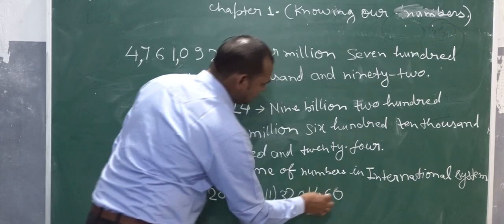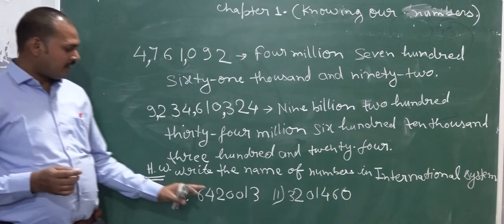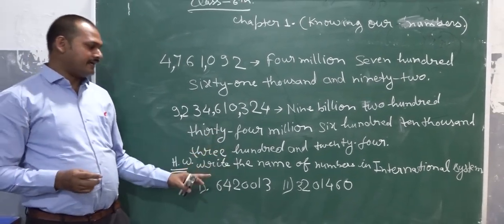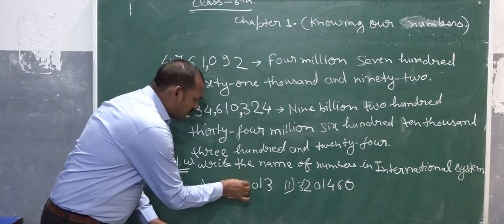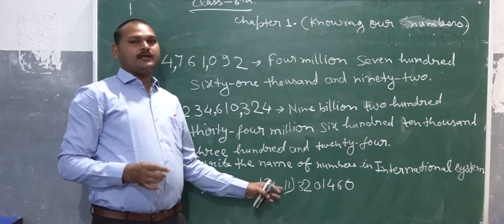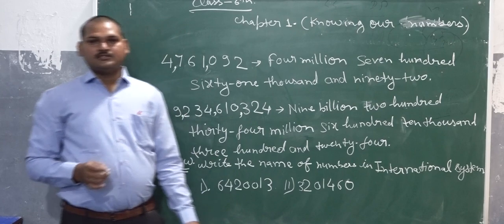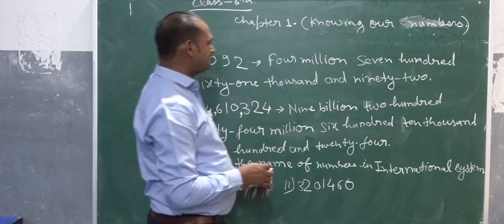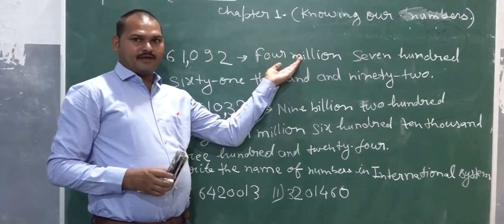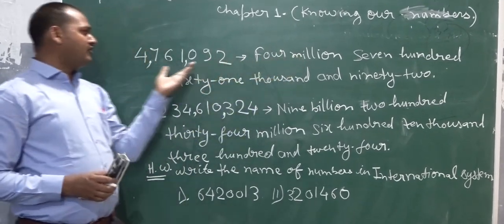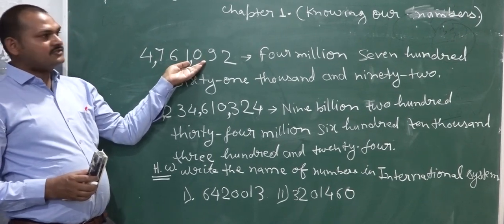These are conditions that you will solve yourself. Write the name of numbers in the international system. Here, the first number is 6420013, and the second one is 3201460. Now the second part: given the name of the numbers, convert them into digits. I think you will be clear and you will write it yourself.